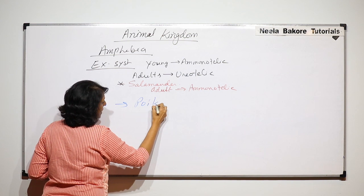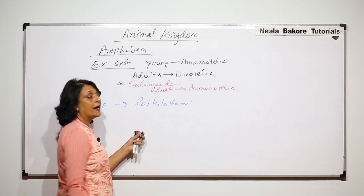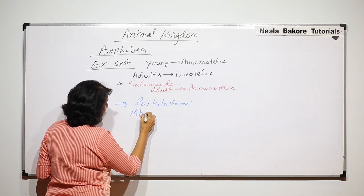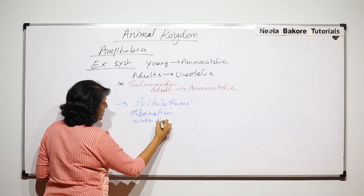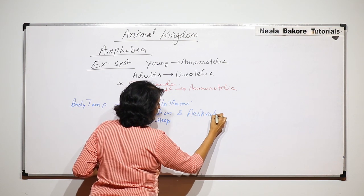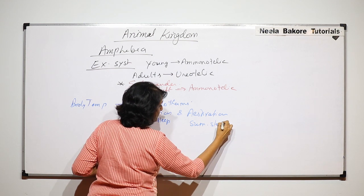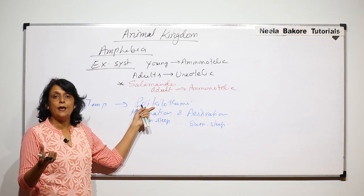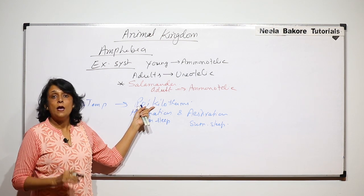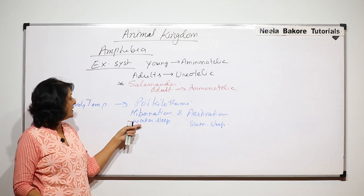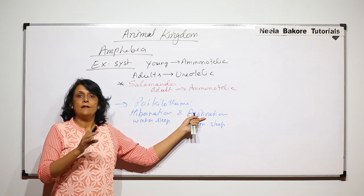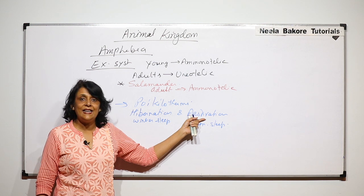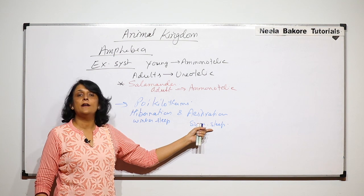Amphibians are poikilotherms — cold-blooded animals whose body temperature changes with the surroundings. To avoid extreme cold they undergo hibernation (winter sleep), and to avoid extreme heat they undergo estivation (summer sleep). These are adaptations to prevent enzyme inactivation or denaturation at temperature extremes.